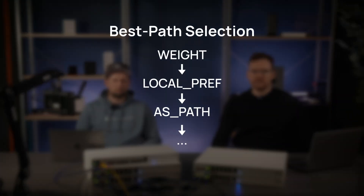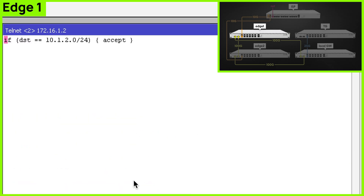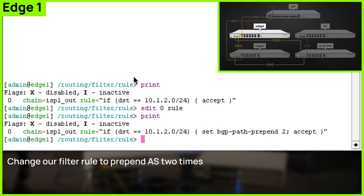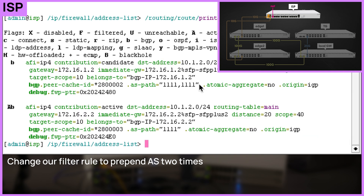To understand how to do that, we need to look at best path selection. First in the hierarchy is weight, which is always local to the router. The next one is local pref, which can be used only within an AS. So our best bet is AS path manipulation. Let's see what happens on the ISP side — we can see that the AS path is prepended, and the route with the shortest AS path is more preferred.